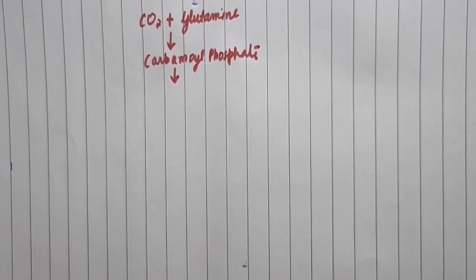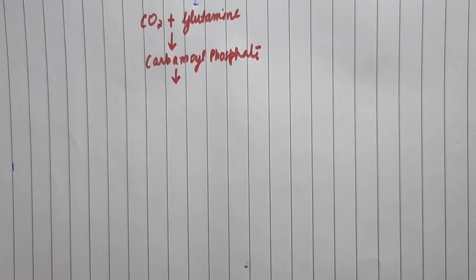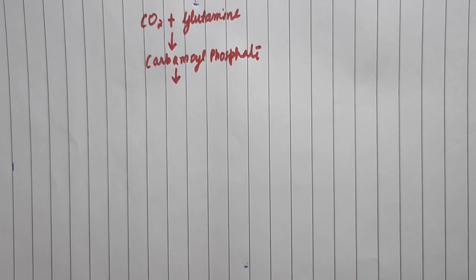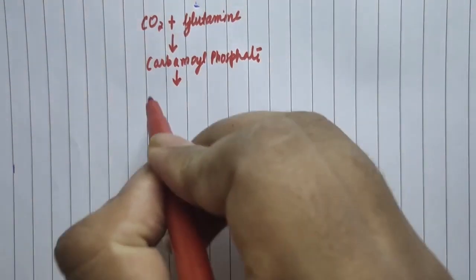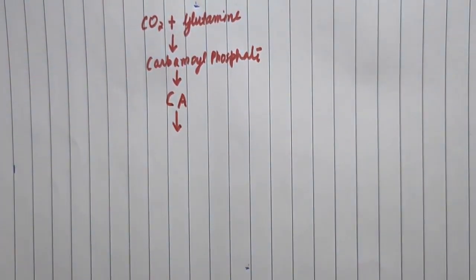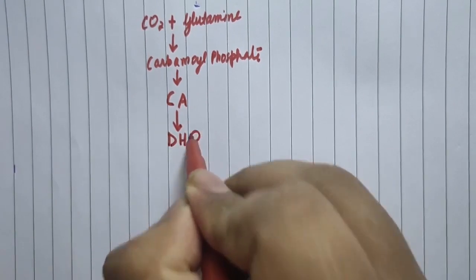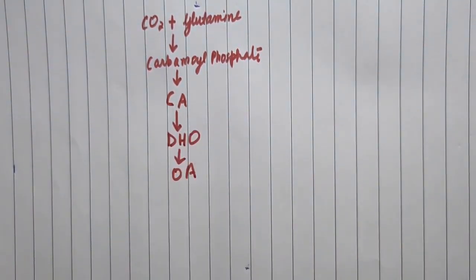Now listen to this story. There is a guy whose name is CA, and he loves a girl whose name is OA. But love stories don't end up as marriage very easily — there are a lot of struggles. So after carbamoyl phosphate, CA will come, and then OA should come, but DHO comes in between CA and OA. So the order is: CA, then DHO, then OA.